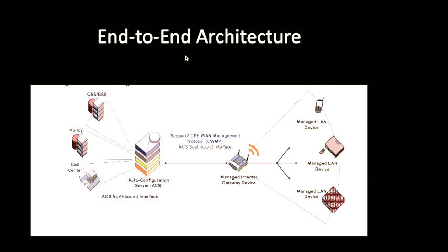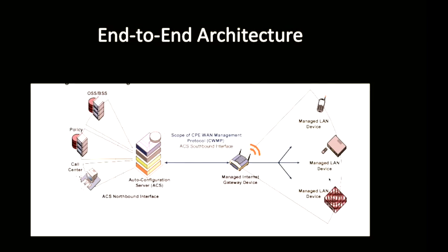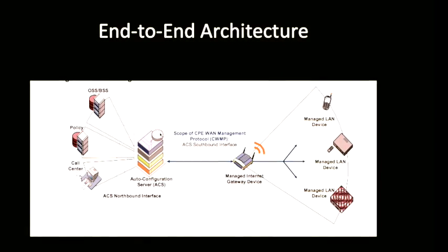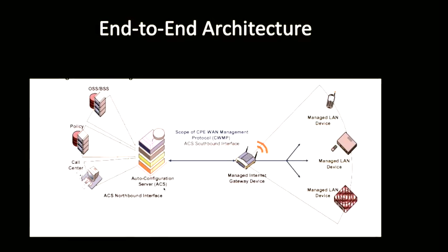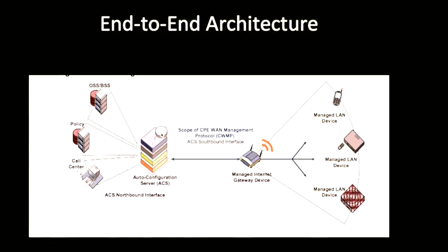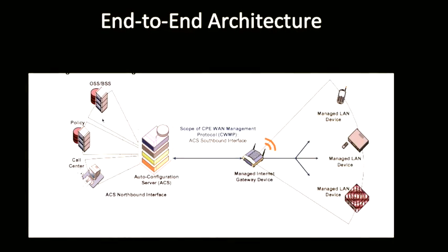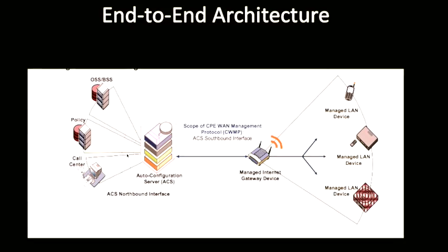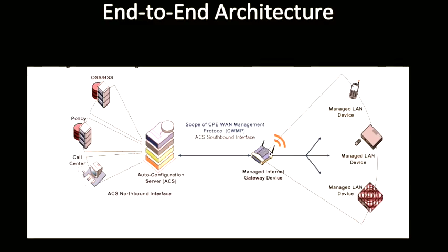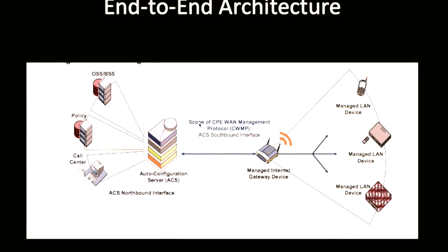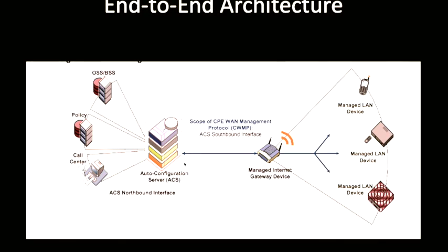Let's see the end-to-end architecture before giving the definition of TR-069. We have a list of CPE devices like managed LAN devices, routers, modems, and more. At the edge there is an Auto Configuration Server known as ACS, which lies in the network. This ACS is connected with OSS, policy, and call center via a northbound interface. The ACS manages the gateway device via the ACS southbound interface.